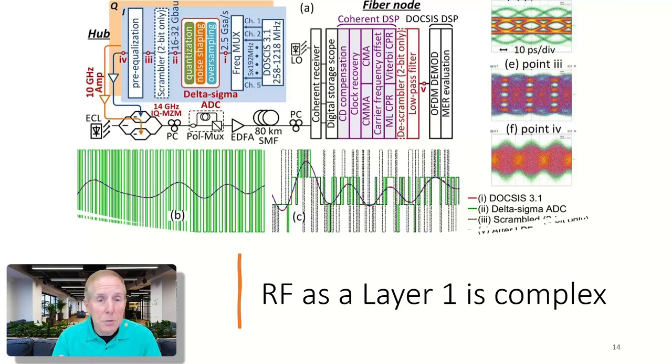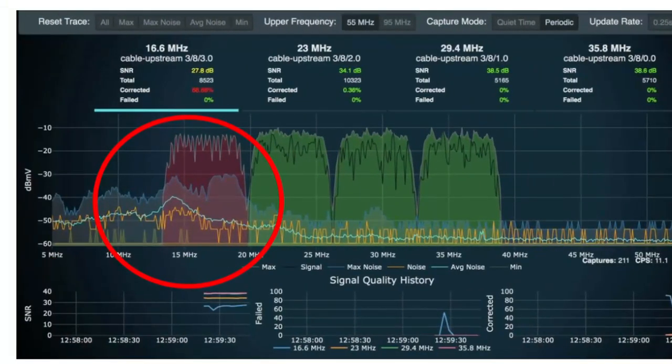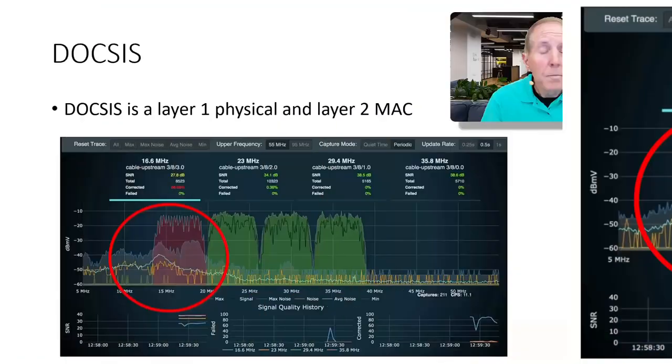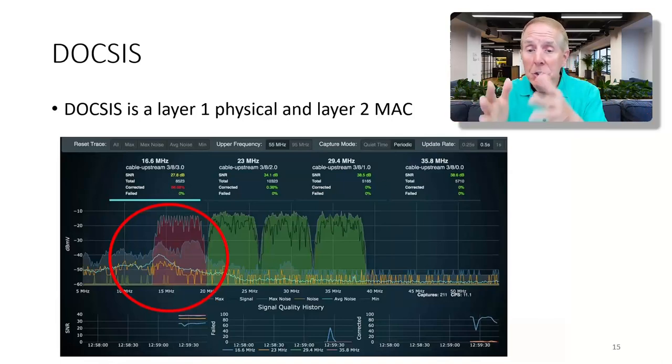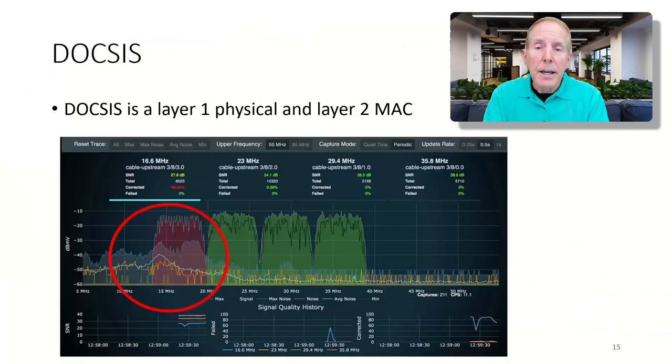When we talk about DOCSIS, we're using RF at Layer 1. If you were to look with this piece of test equipment, this is what you would see on your coax cable coming into your cable modem. You would see RF signal broken into sections called channels. As you pay for a higher speed of internet delivery to your home, you're going to get more and more of these channels bonded together to give you that speed.